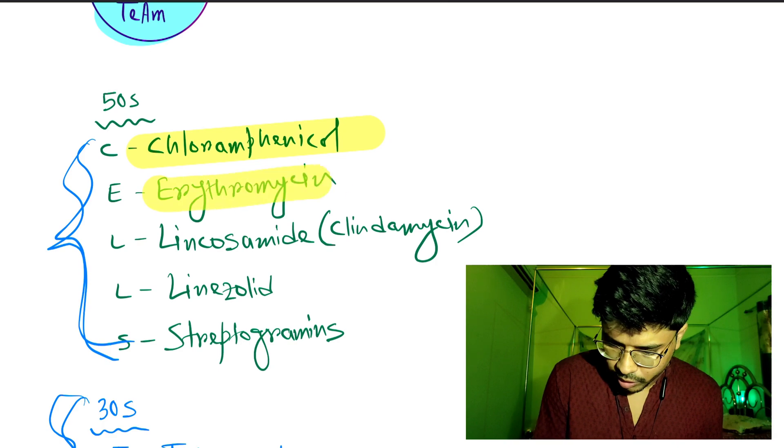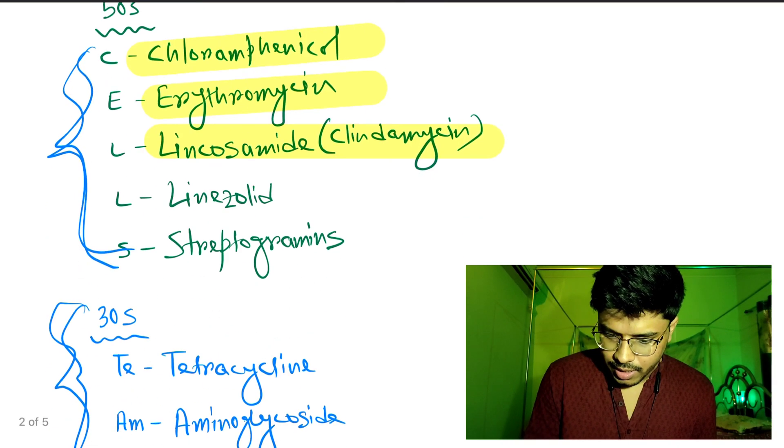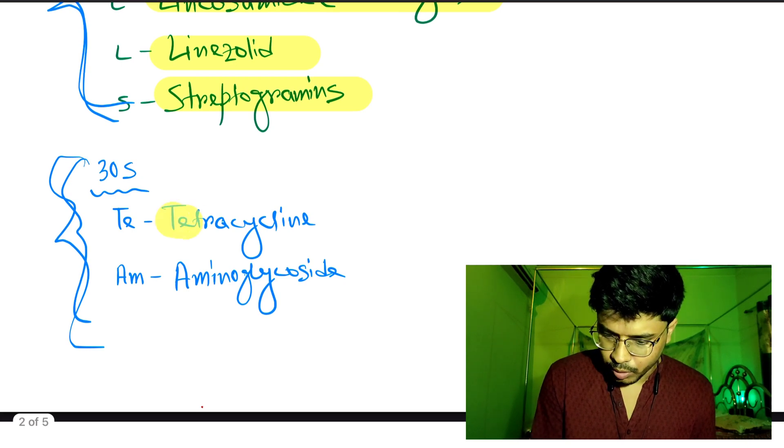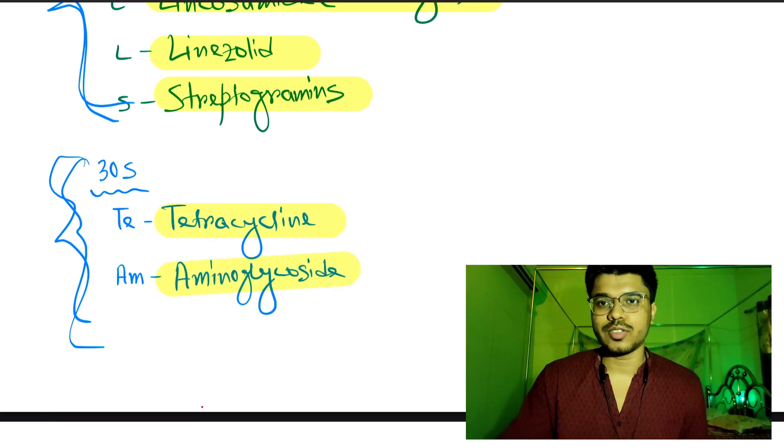C for Chloramphenicol, E for Erythromycin, L for Lincosamide, L for Linezolid, S for Streptogramins. 30 TEAM: T for Tetracycline, A for Aminoglycoside.